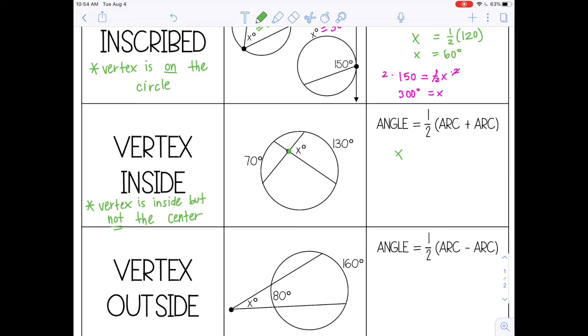So my angle here is x, we don't know, and my two arcs are 70 and 130. It doesn't matter which one you write first when you're adding. All right, so I'm going to go ahead and add those together. 70 plus 130, that's 200. And then half of 200 is 100 degrees. So this angle is 100 degrees.